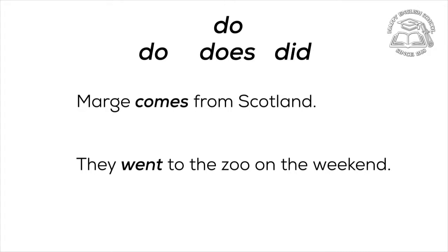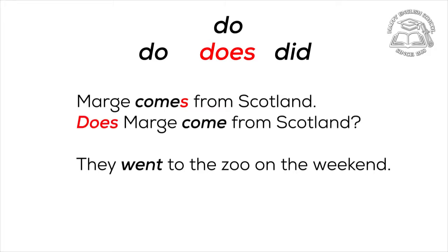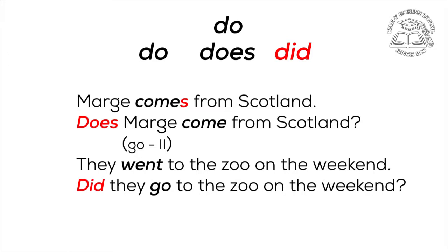In the first sentence the main verb stands in the first form with ending -s. That means we should take 'do' with the ending -s, that is 'does', and leave the main verb in the first form with no endings. In the second sentence the main verb is 'went' — it's 'go' in the second form. That means we should take 'do' in the second form, that is 'did', and again leave the main verb in the first form with no endings. 'Did they go to the zoo on the weekend?'